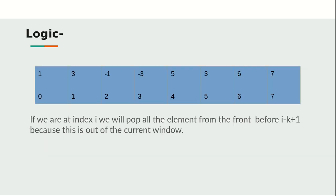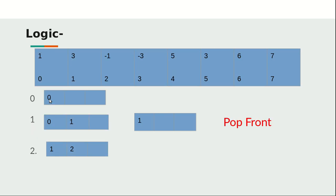These are the indices of the array. One thing to observe is that if we are currently at index i, any value before index i minus k plus one is of no use because it falls beyond the current window. For example, if we're at index three, the value at index zero is outside the window and is of no use.